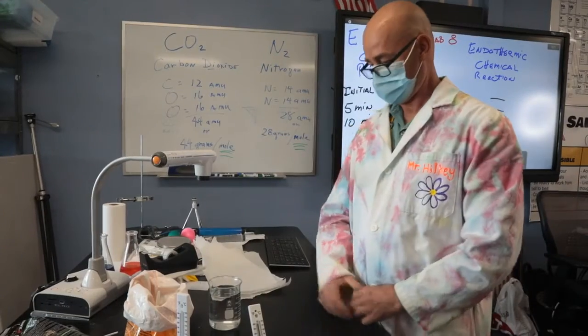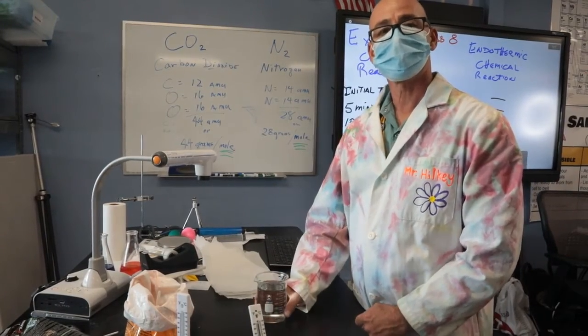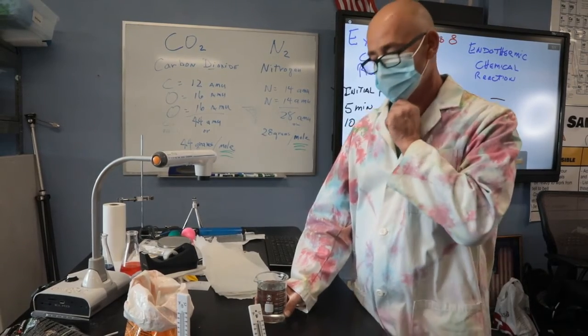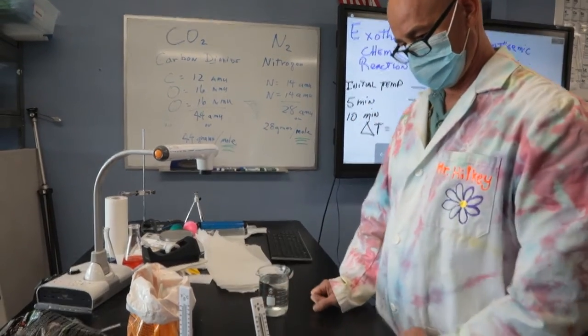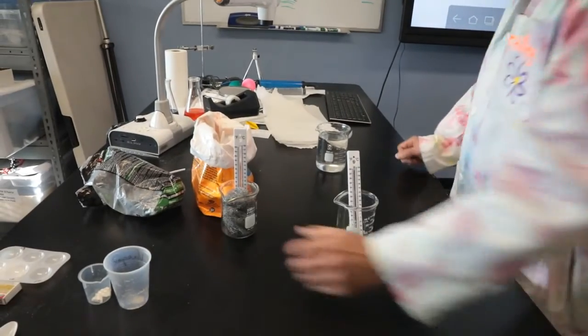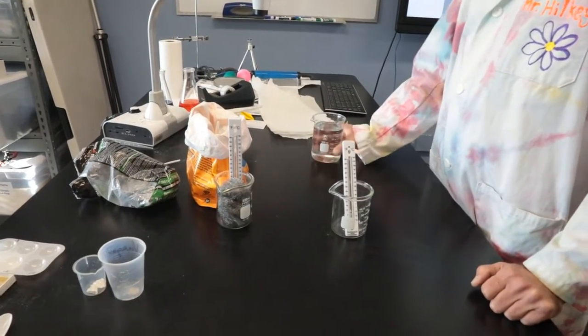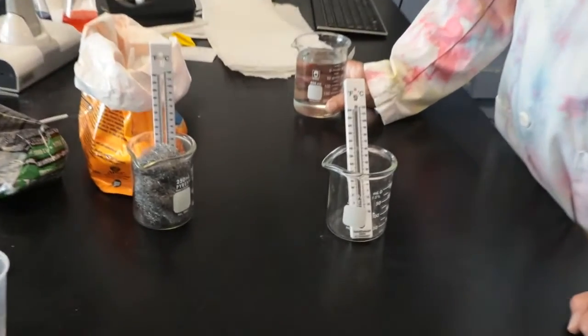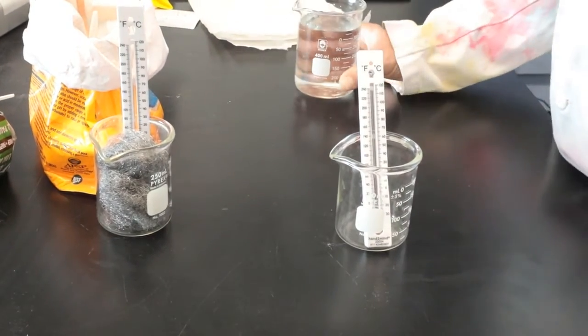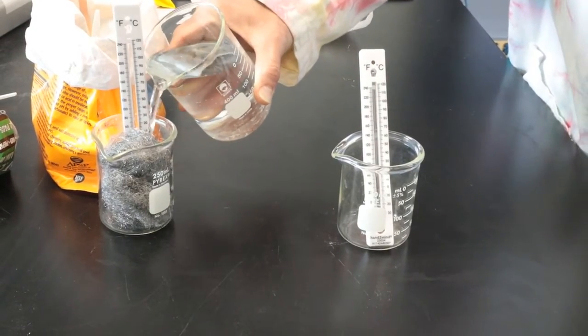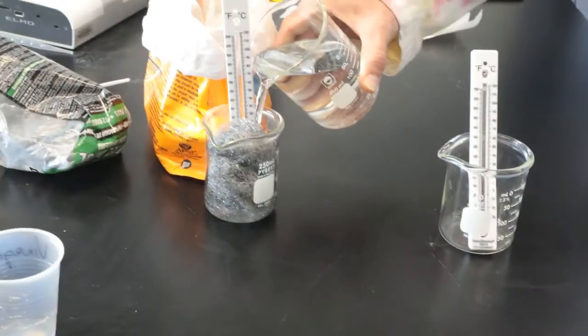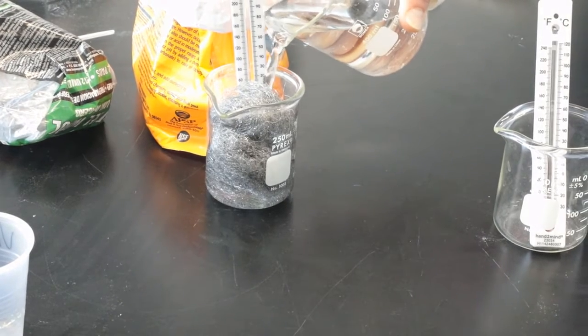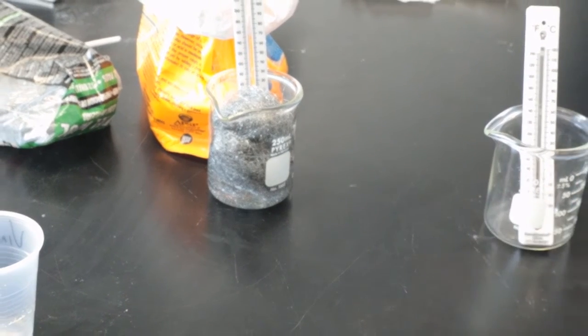So first thing we're going to do is the endothermic reaction. David is going to pour acetic acid, a.k.a. vinegar, into both of these beakers, probably just enough to cover the thermometer. Why don't you put about 150 milliliters in each beaker. A little more, up to that 150. And 150 milliliters into the other reaction.